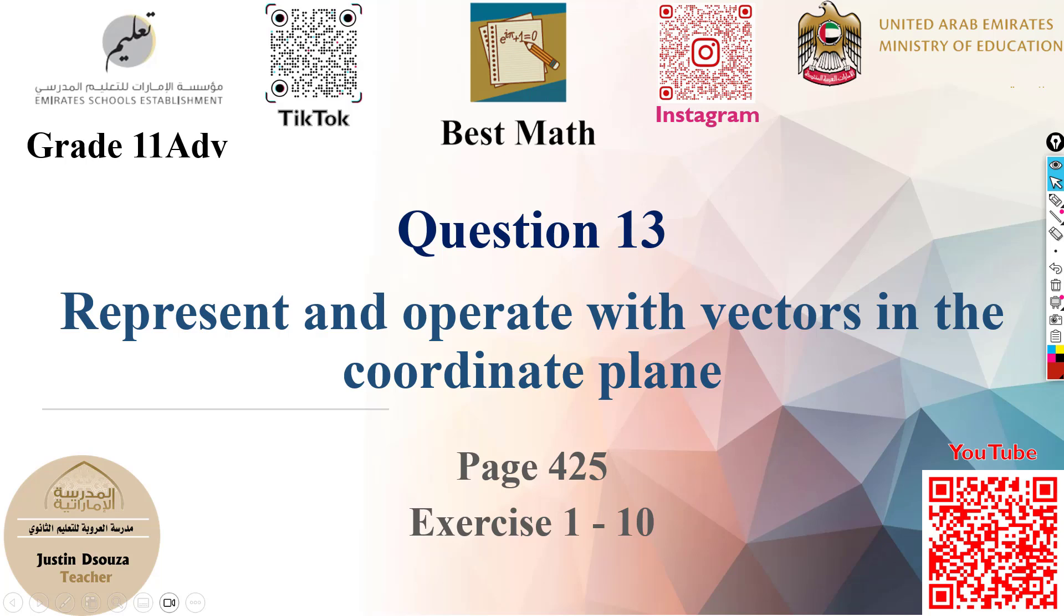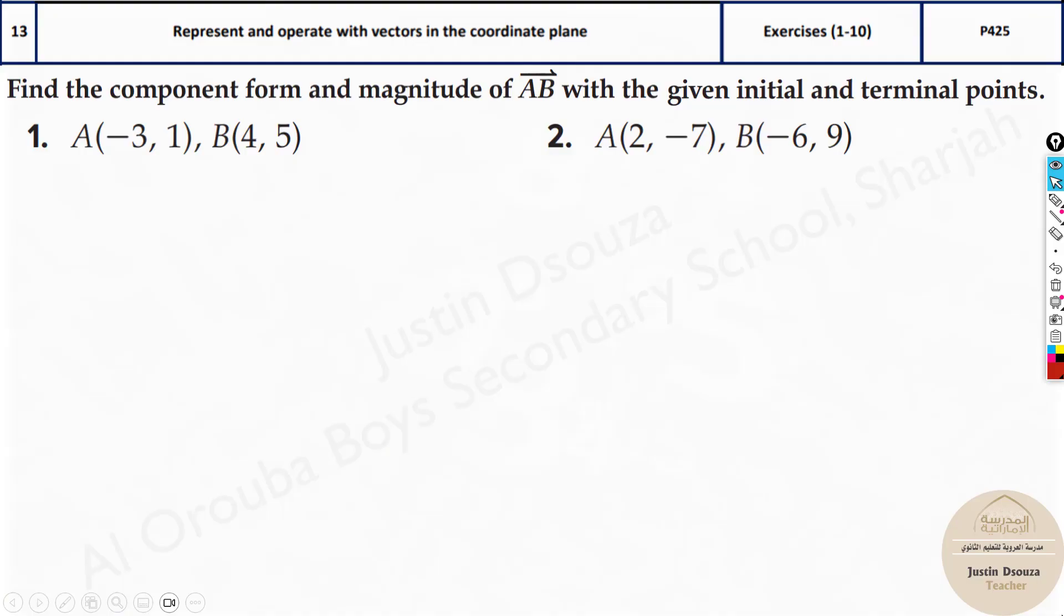In this video we will learn how to find the component form and the magnitude of a vector. Here we have been given the initial and the terminal points of the vectors. You can see A is starting at (-3, 1) and B ending point is (4, 5).